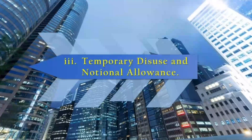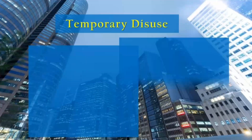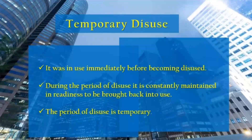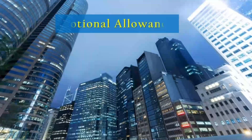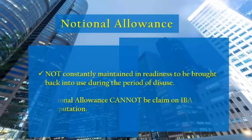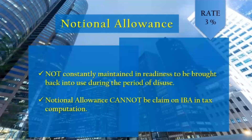Temporary disuse and notional allowance. Temporary disuse applies when: the building was in use immediately before becoming disused; during the period of disuse it is constantly maintained in readiness to be brought back into use; and the period of disuse is temporary. Notional allowance applies when the building is not constantly maintained in readiness during the period of disuse. Notional allowance cannot be claimed on IBA in the tax computation.